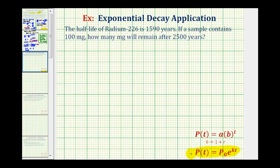Where P(t) is the amount after time t, P₀ is the initial amount, k is the continuous decay rate, and t is the time.